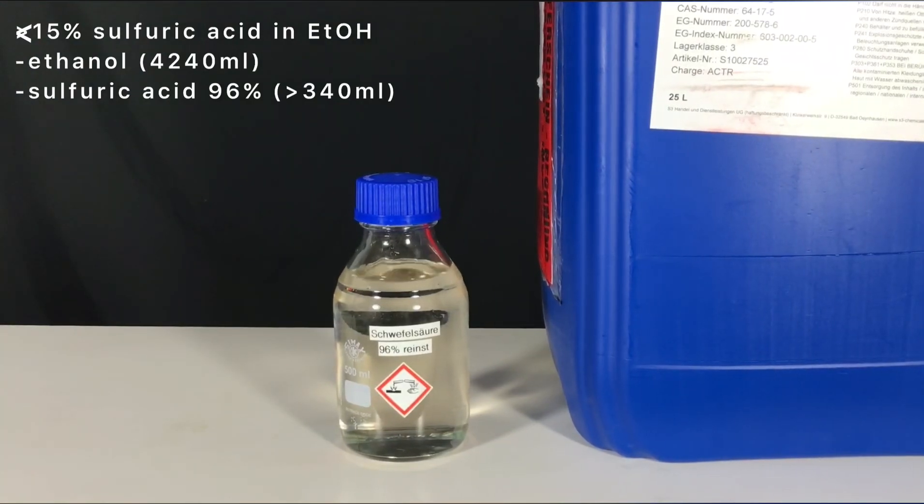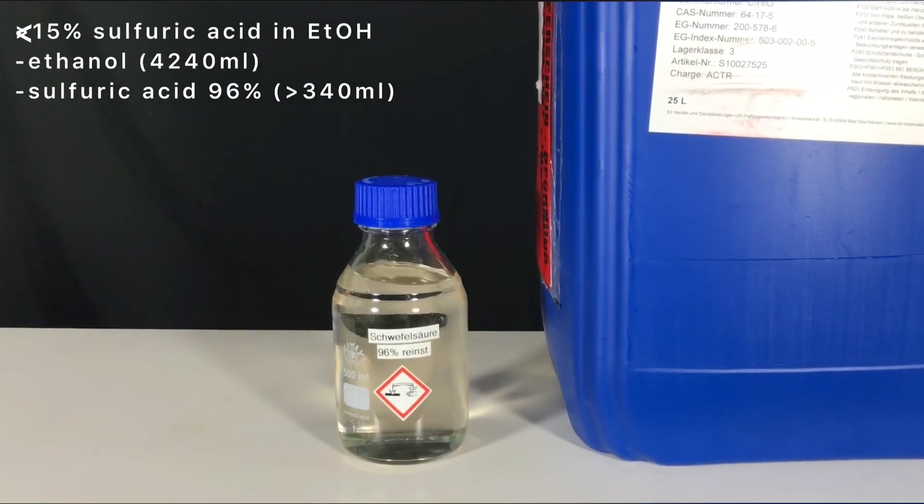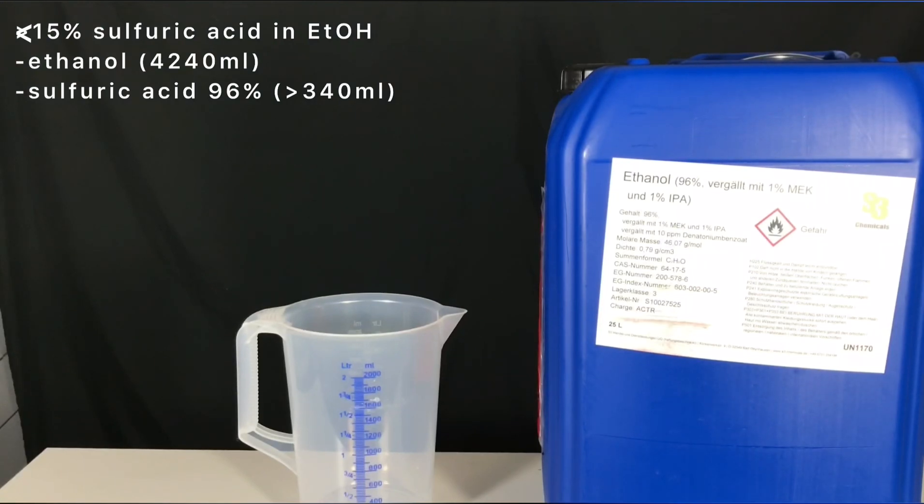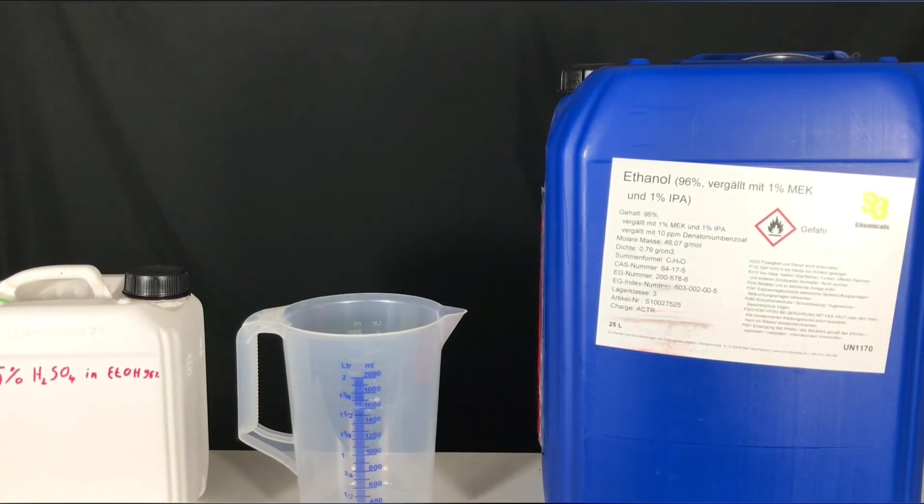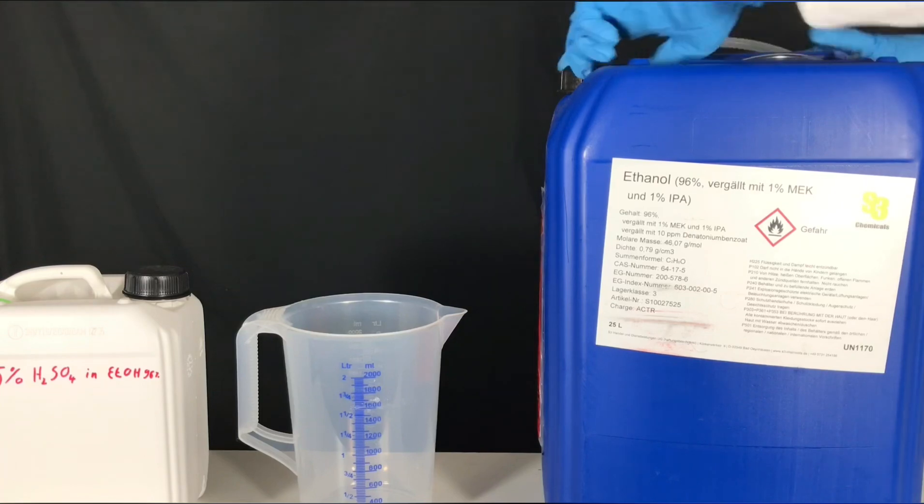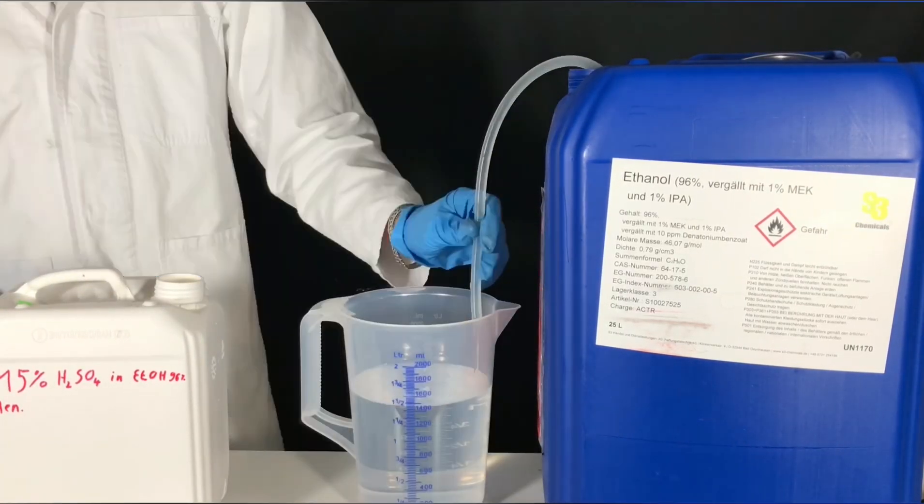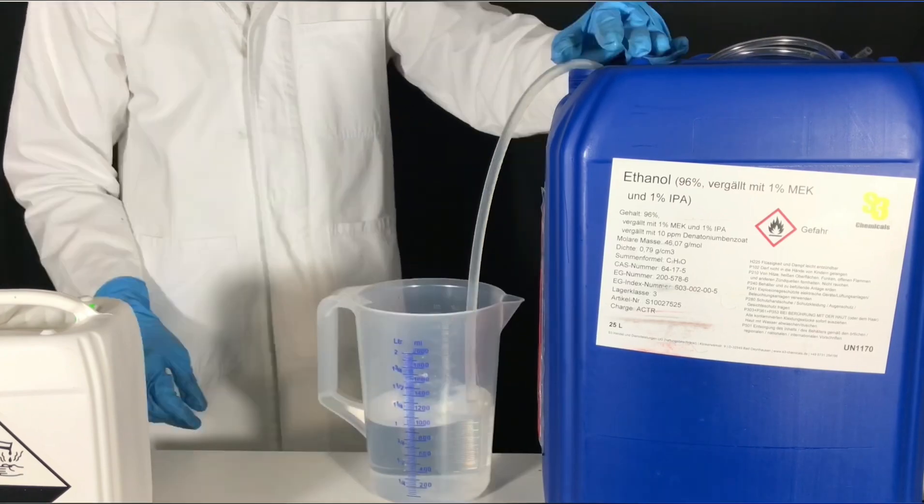For a solution containing a little less than 15% sulfuric acid in ethanol, 4.24 liters of 96% ethanol are mixed with 340 milliliters of 96% sulfuric acid. The ethanol was transferred to a measuring cup using a silicon tube as a siphon.